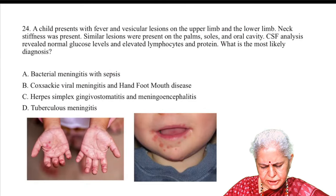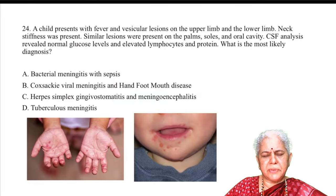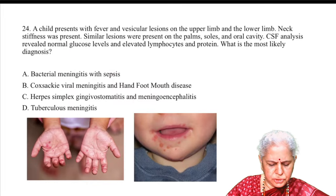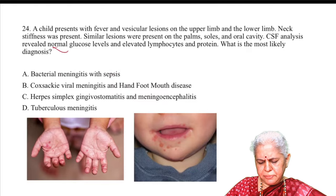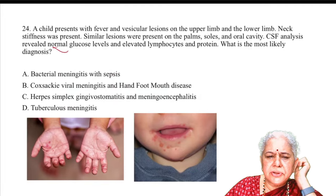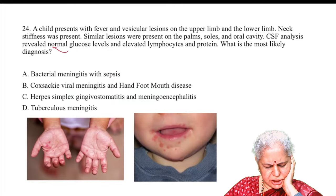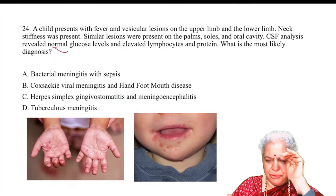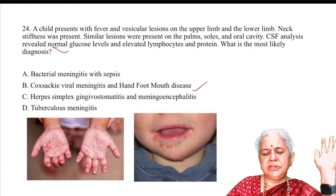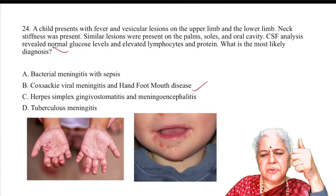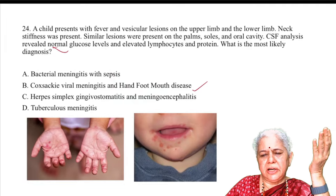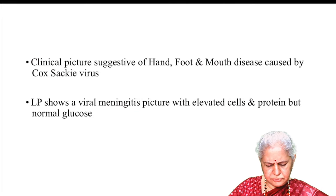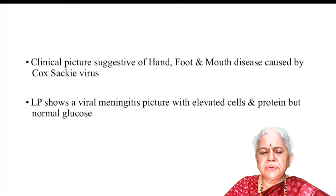A child presents with fever, vascular lesions on upper and lower limbs and neck stiffness, with similar lesions on palm, sole, and oral cavity. CSF analysis shows normal glucose and elevated lymphocytes and protein. The diagnosis is hand, foot, and mouth disease (HFMD) with CNS complication — Coxsackie virus. CSF sugar is normal; protein is increased; cells are present. The typical HFMD with CNS involvement can present like meningitis.